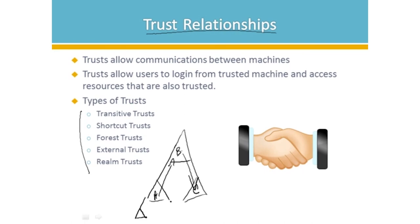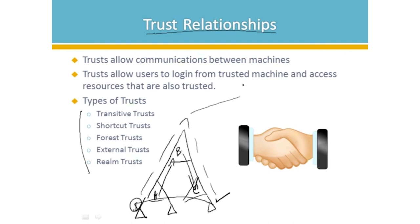If you have a complex organization and you want a machine to be able to access something across the tree, you can create a shortcut trust so the flow doesn't have to go all the way up and all the way down — it can cut straight across. A forest trust is if you have a branch or partner network and you want to integrate two Exchange organizations to work together. That's going to be an external trust. A realm trust is really if you're going to work with a Unix realm — very similar to an external trust — where you're starting to trust either a partner network or other networks within your organization.